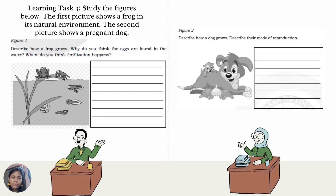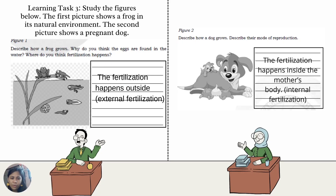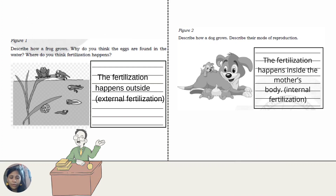Learning Task 3: Study the figures below. The first picture shows a frog in its natural environment; the second picture shows a pregnant dog. Figure 1 — describe how a frog grows, why the eggs are found in water, and where fertilization happens. Figure 2 — describe how a dog grows and describe their mode of reproduction. The answers: in Figure 1, fertilization happens outside the body — external fertilization. In Figure 2, fertilization happens inside the mother's body — internal fertilization.